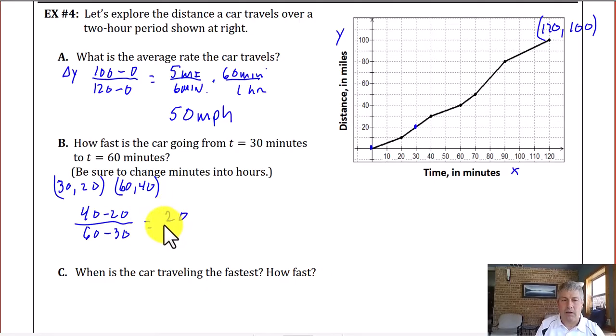And again, they want us to convert this from minutes to hours. So we find our slope, our change in y, 40 minus 20 over our change in x of 60 minus 30. And we get 20 over 30. And that's 20 miles in 30 minutes. So we convert 60 over one. There's 60 minutes in one hour. And that will simplify to 40 miles per hour.